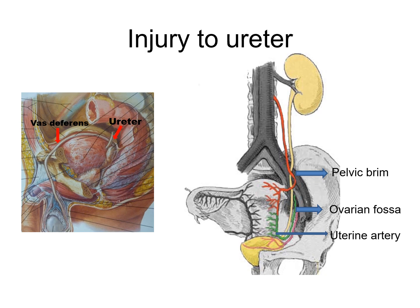Injury to ureter. According to Kenson and Hinman, the ureter may be injured during a surgical procedure at one of the following four dangerous sites. The first is the point where the ureter crosses the iliac vessels. The second is in the ovarian fossa. The third is where the ureter is crossed by the uterine artery. The fourth is the base of the bladder.